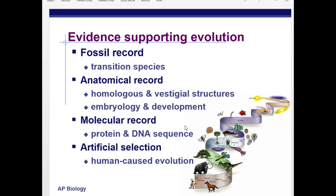Now let's take a deeper look at the evidence that supports evolution. Generally we divide it into four areas: the fossil record; the anatomical record, also known as comparative anatomy, where we compare certain structures in adult organisms and in developing organisms called embryos; the molecular record, which is our DNA and proteins; and artificial selection.